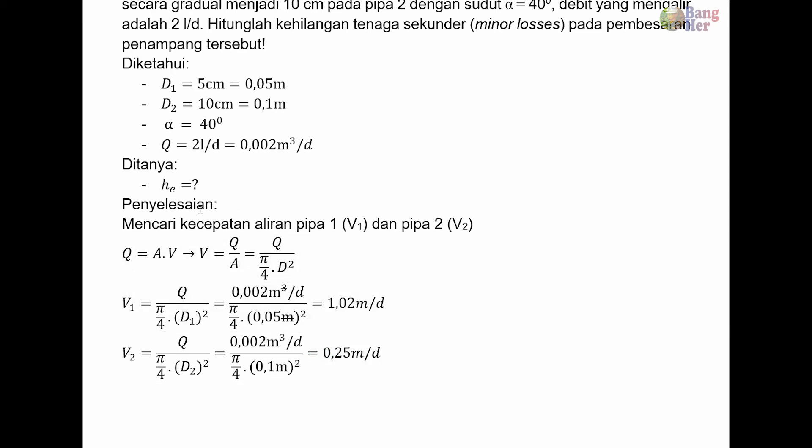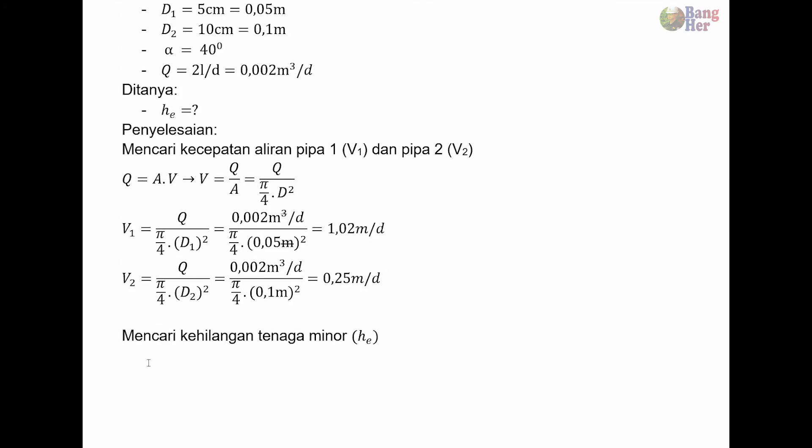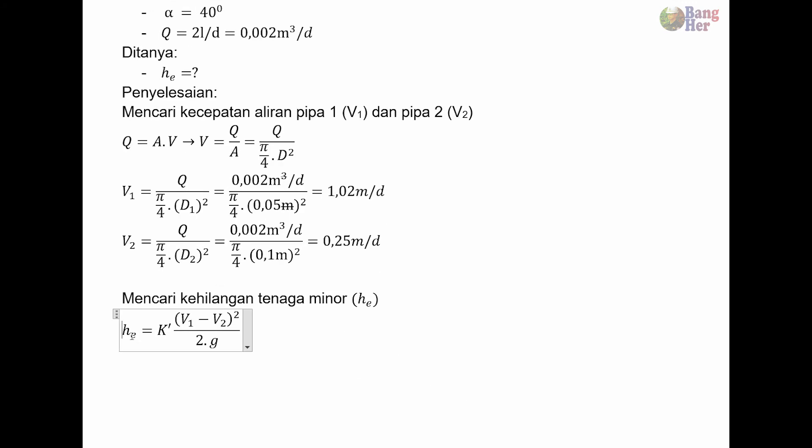Langkah selanjutnya, kita bisa mencari kehilangan tekanan minor atau minor losses akibat pembesaran pada penampang. Persamaan untuk mencari kehilangan tenaga minor adalah sebagai berikut: HE sama dengan K ekspansi kali (V1 kurang V2) dikuadratkan dibagi 2G.